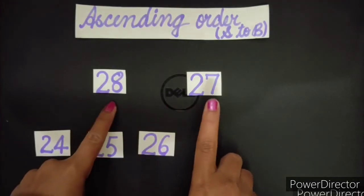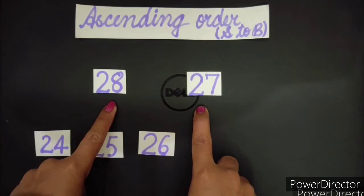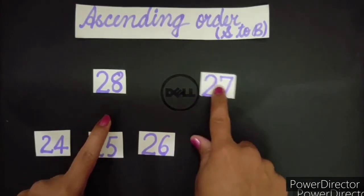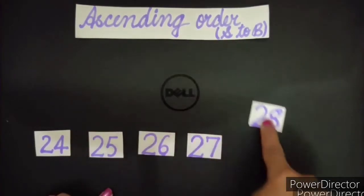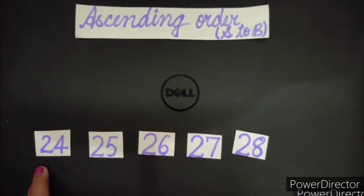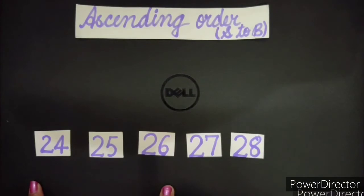Now out of 28, 26, 27, which one is the smallest? 26. We will bring it down. Out of 28 and 27, which one is smaller? Kaunsa chota hai? 27. Let's bring it down.